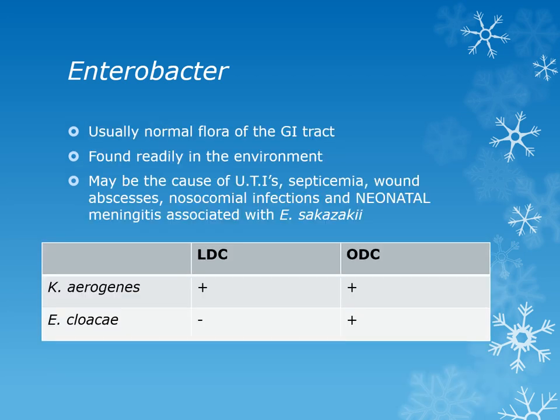Enterobacter are normally found as gastrointestinal flora and are common in the environment including soil, water, and sewage. They may cause UTIs, septicemia, wound abscesses, nosocomial infections, and especially neonatal meningitis associated with Enterobacter sakazakii. Enterobacter is ornithine decarboxylase positive while Klebsiella is ornithine decarboxylase negative — the only outlier is Klebsiella aerogenes, which is ornithine decarboxylase positive.